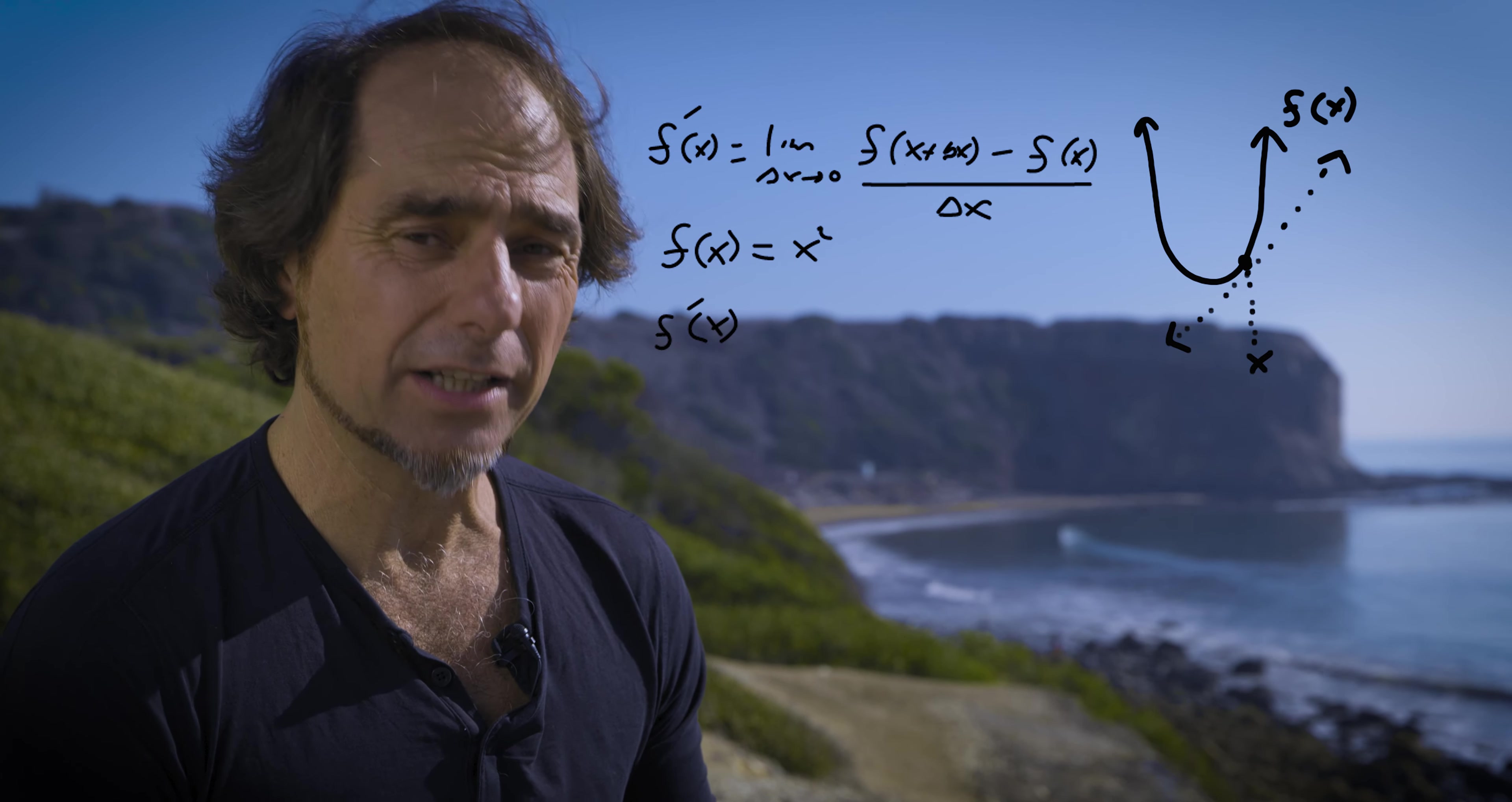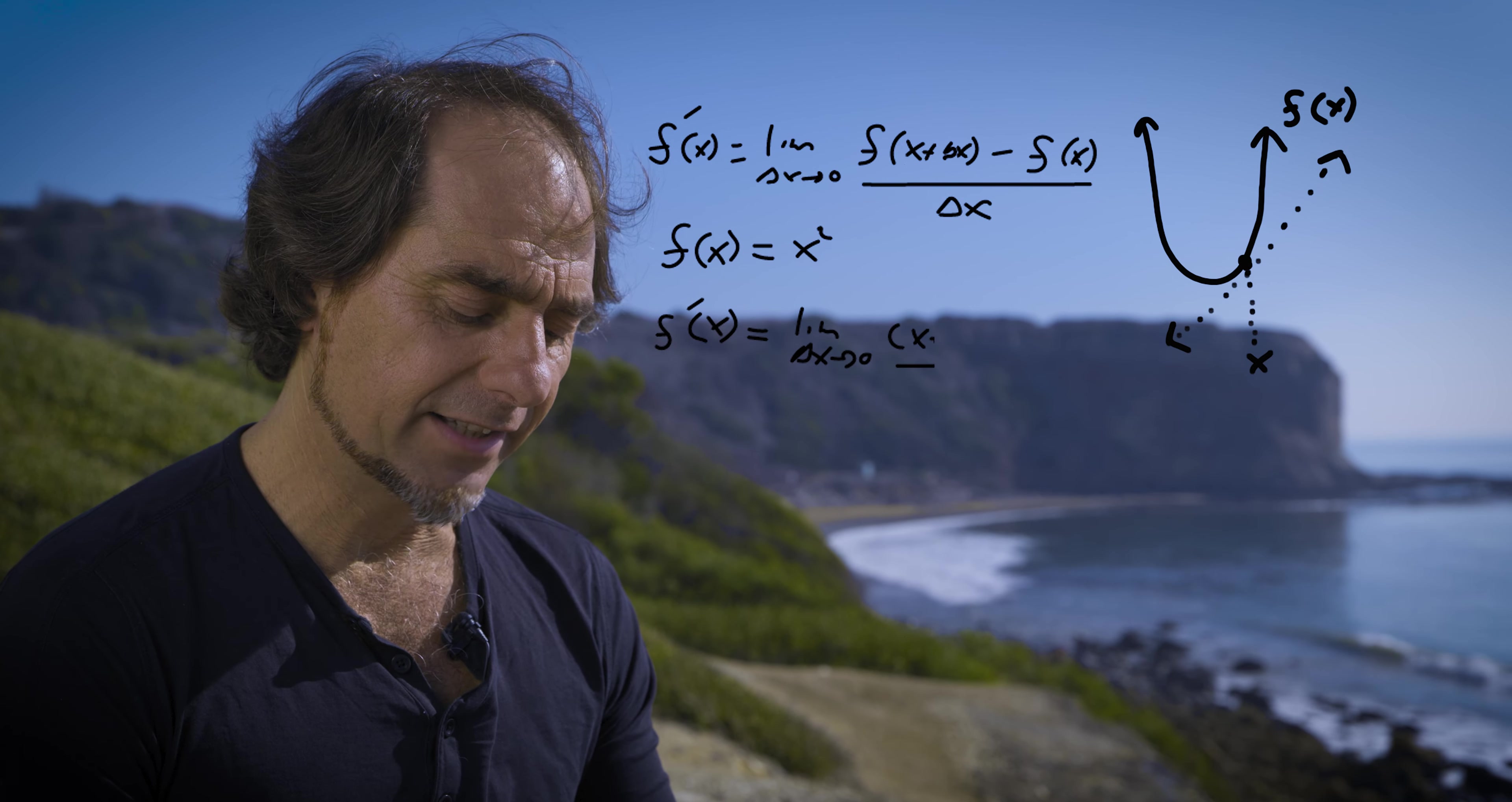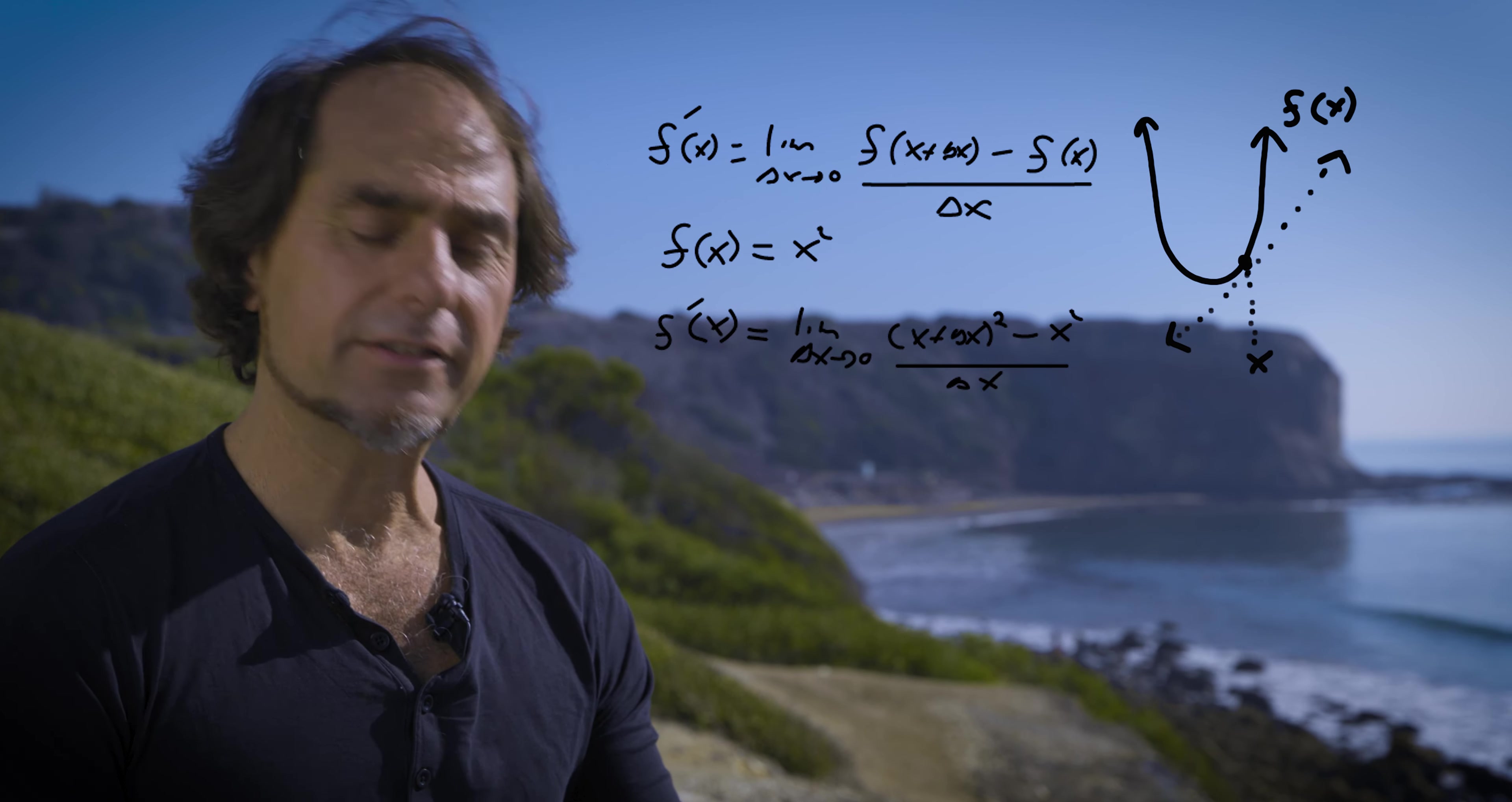Then it says f of x plus delta x. And literally what we do is we substitute in x plus delta x into the function, which gives us x plus delta x quantity squared minus f of x, which is just a normal function, x squared, all over delta x.